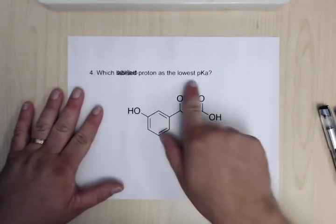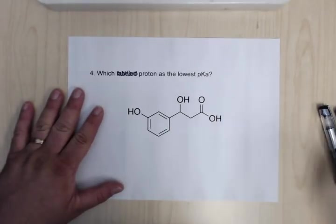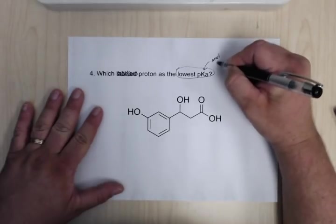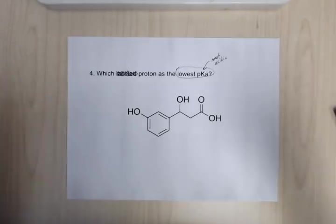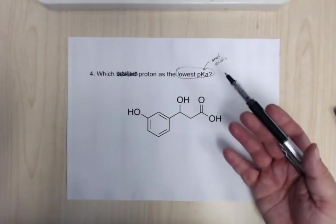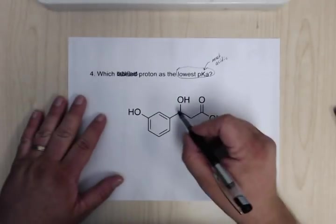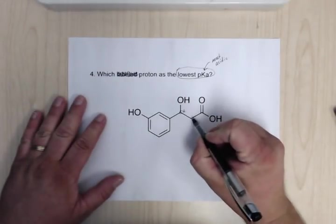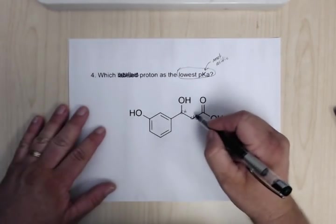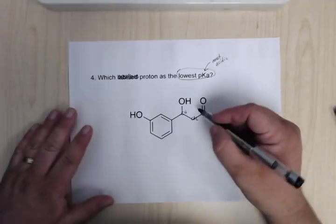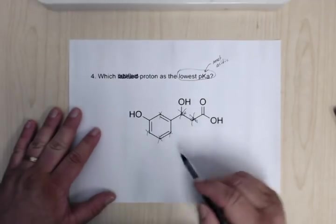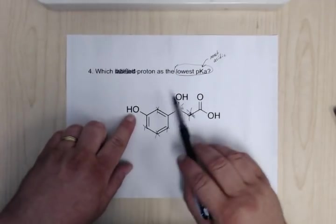Now for this one, you're going to look at which of the protons has the lowest pKa. So this just means this lowest pKa just means most acidic. So don't let the description fool you. So you're looking at OH bonds are going to be more acidic than CH bonds, stuff like that. And so here's a CH, here's a CH2. Now this one's next to a carboxylic acid. It's next to the ketone, but it's definitely a CH bond. So you're not going to have to worry about that. So it's not going to be those. It's not going to be any of these hydrogens here.